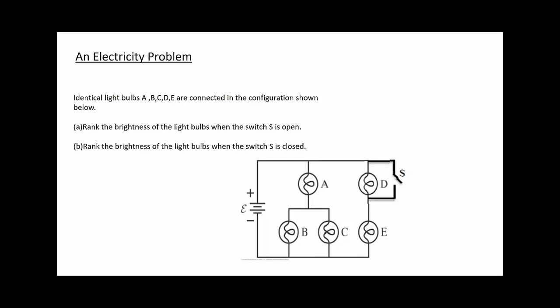Here is the problem. We have A, B, C, D, E, five identical light bulbs, connected as the figure shown. The problem wants you to rank the brightness of light bulbs when the switch S is open and when the switch S is closed.